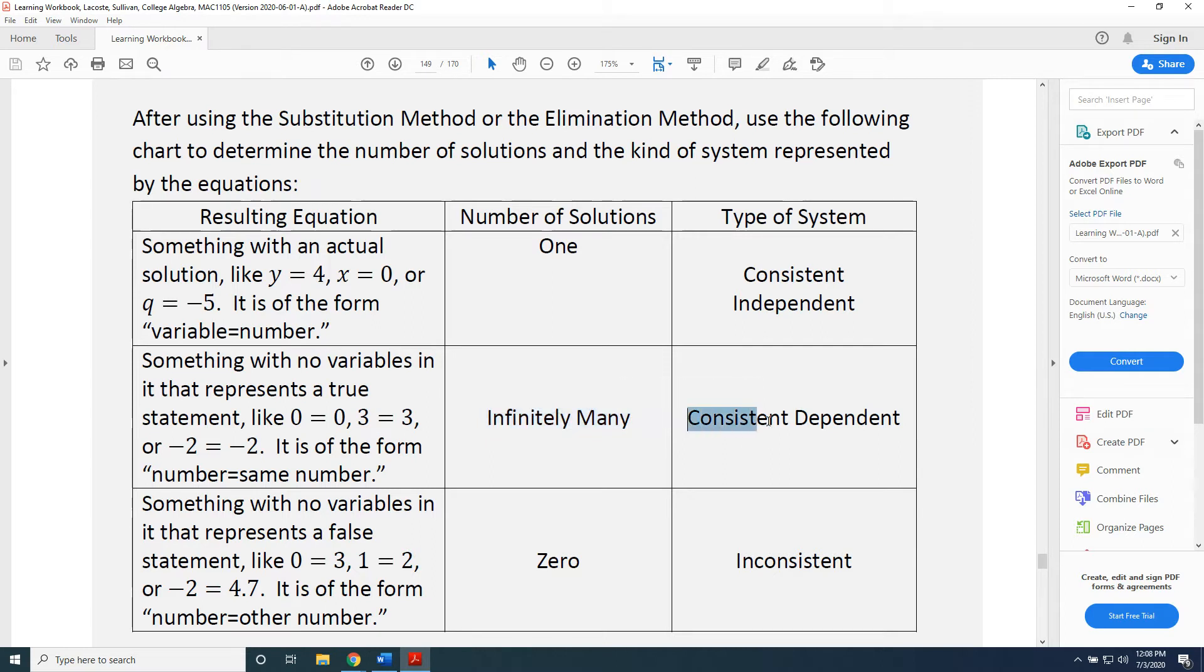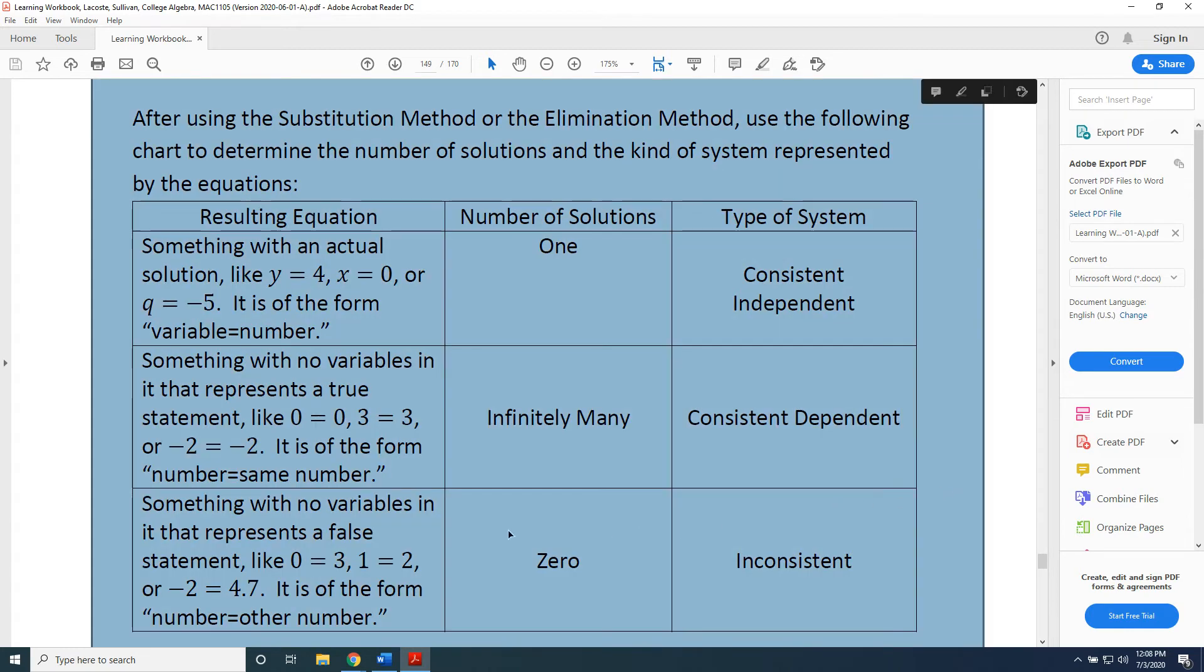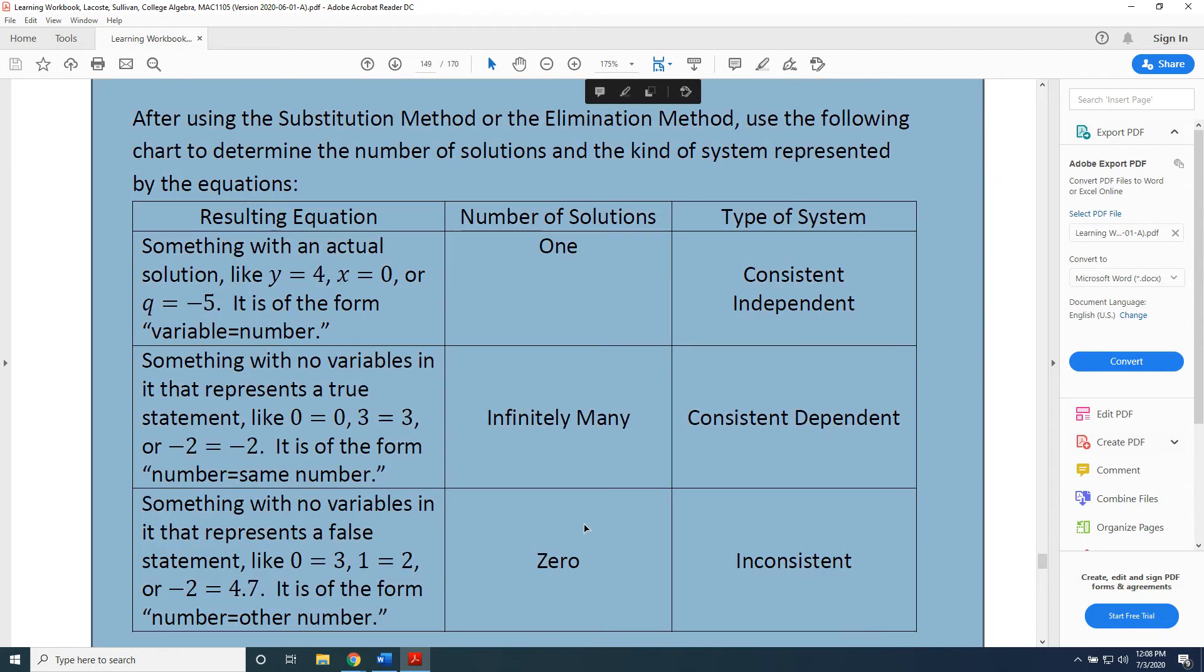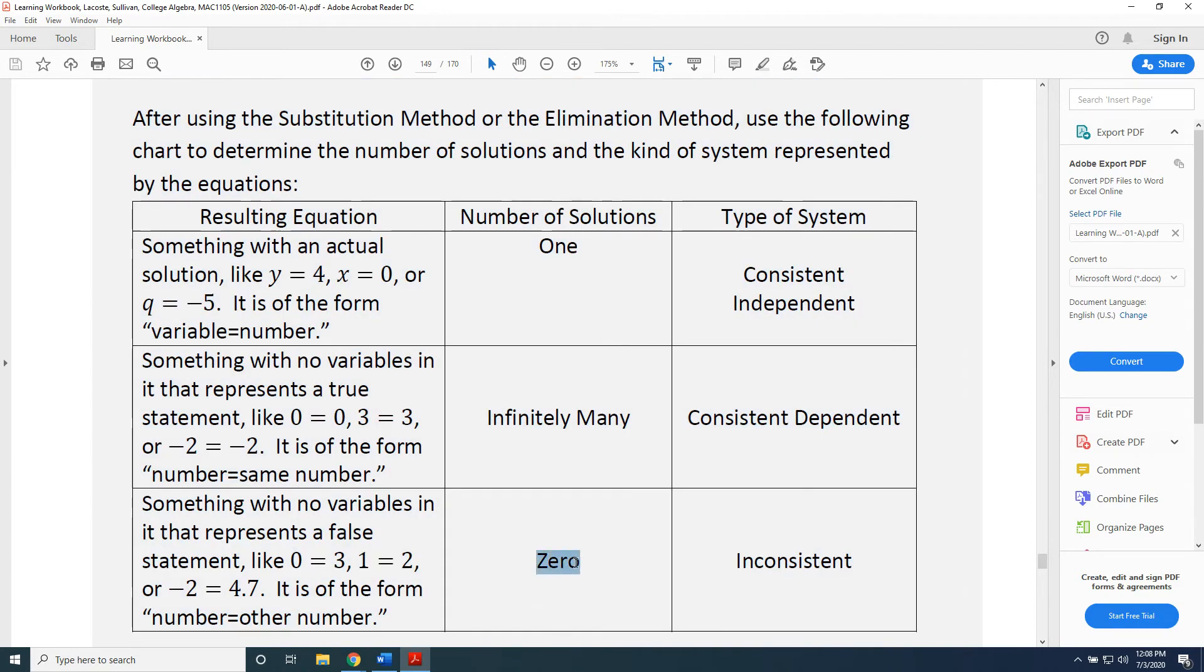The third possibility also assumes that all variables cancel out, but this time leaves you with a false statement, such as 0 equals 3, or 1 equals 2, or negative 2 equals 4.7, or more generally, any equation of the form number equals other number. In this case, we're dealing with a number of solutions that would be 0, no solution, and the type of system is referred to as inconsistent.